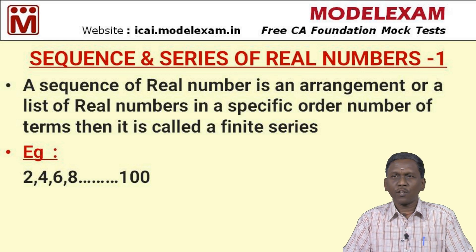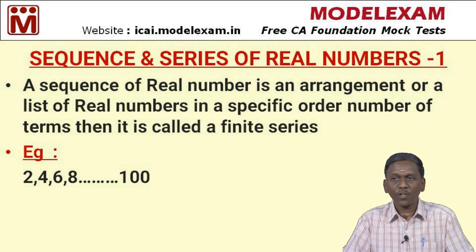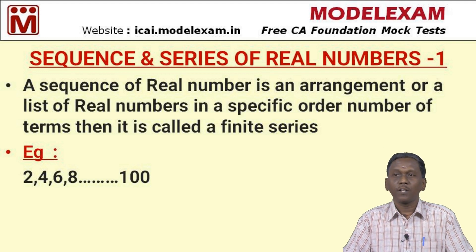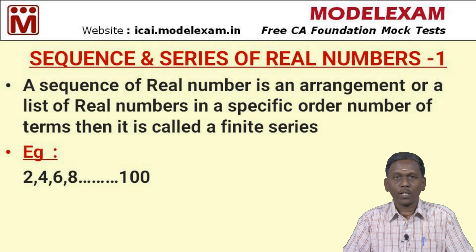A sequence of real numbers is an arrangement or a list of real numbers in a specific order. If a sequence has a finite number of terms, it is called a finite sequence. For example: 2, 4, 6, 8 up to 100.